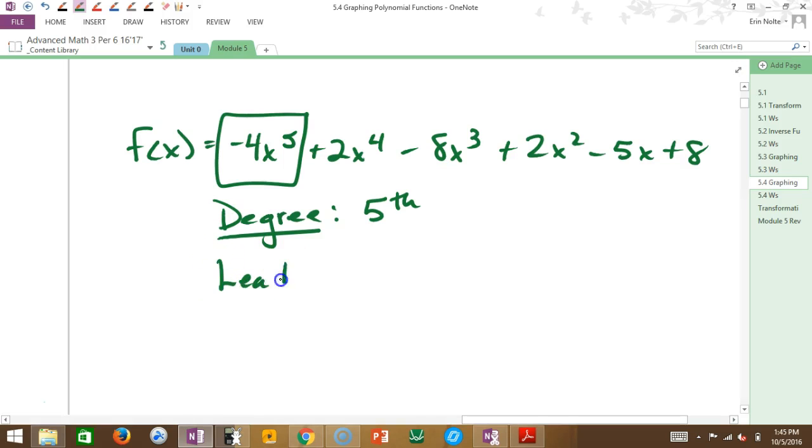The leading coefficient is simply the number that's in front of the x to the fifth. So what's my leading coefficient on this? Negative four. Okay, that also gives me information about what this looks like. The negative tells me what? Flips it upside down. The four tells me it's steep.